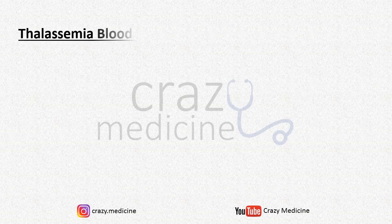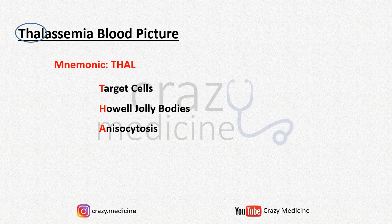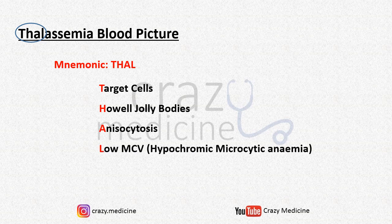Last is the thalassemia blood picture. You can remember it from the name itself. The mnemonic is THAL: T stands for target cells, H for Howell-Jolly bodies, A for anisocytosis, and L for low MCV, i.e. hypochromic microcytic anemia.